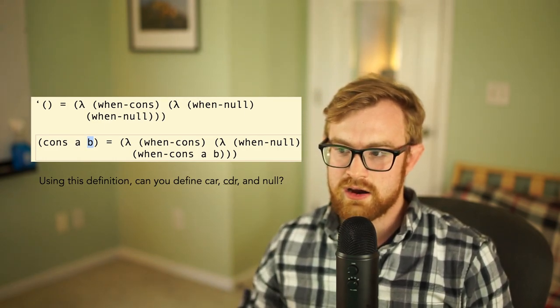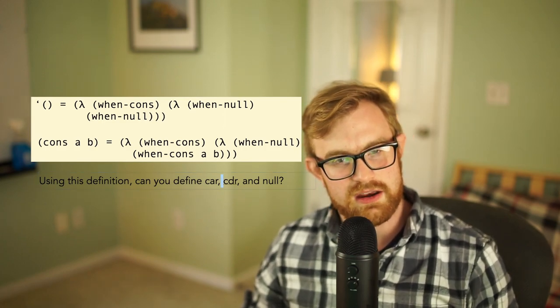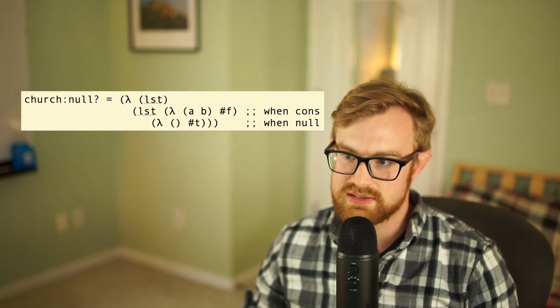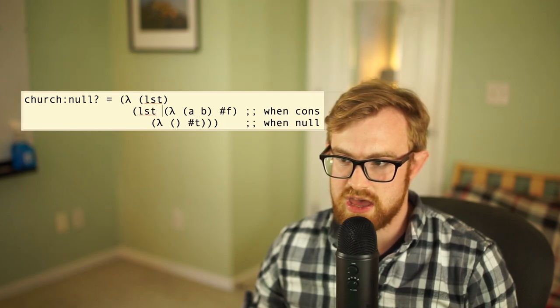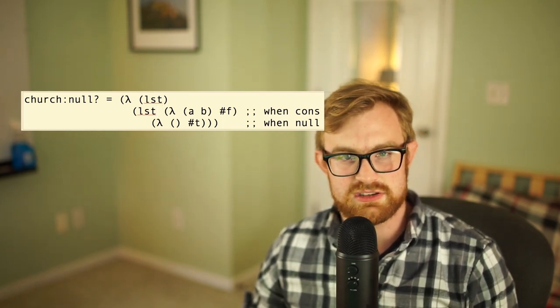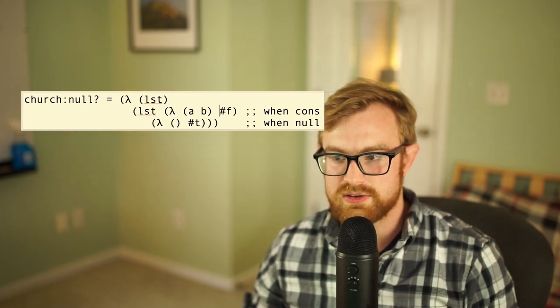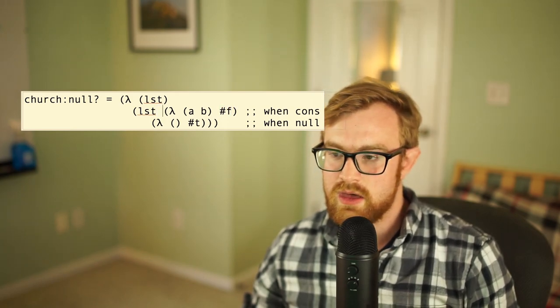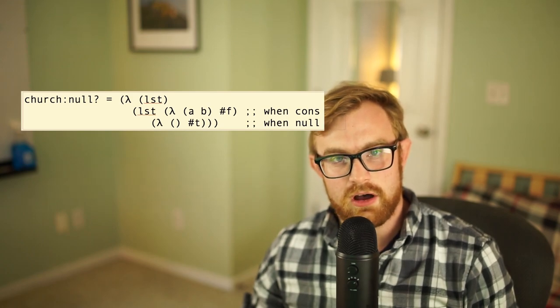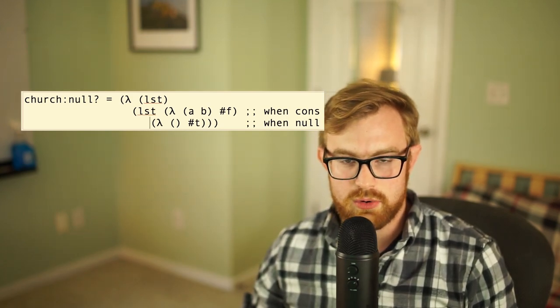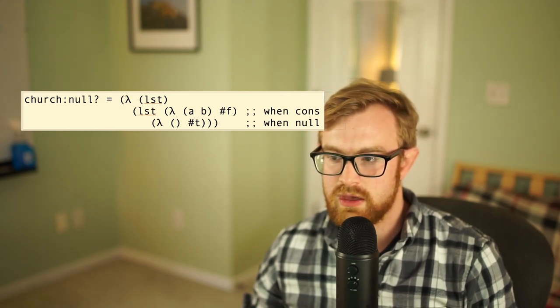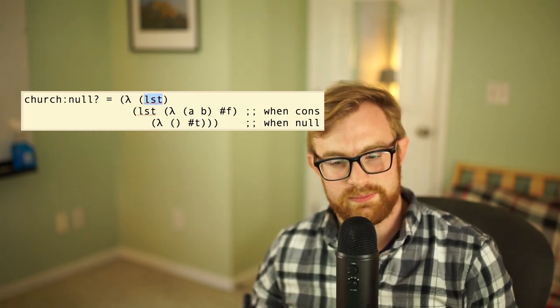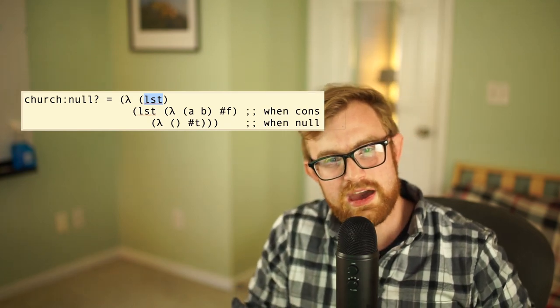So how would we define car, cdr, and null?? So I'll tell you how to define null? here and then I'm going to let you work out car and cdr on your own. So here's null?: we take a list and then we pass for the cons callback that's going to take two arguments a and b, which is going to be the two values in the cons cell, and we're going to return false because null? should return false when this list is a cons cell. And for the true callback, or sorry, for the null callback, we're going to pass a lambda that takes zero arguments because null doesn't give us any information, and returns true because when this list right here is null, null? should return true.